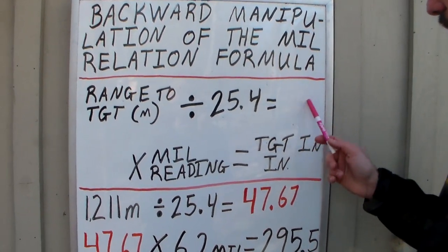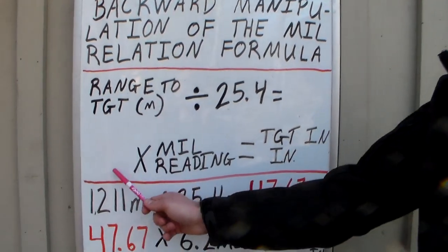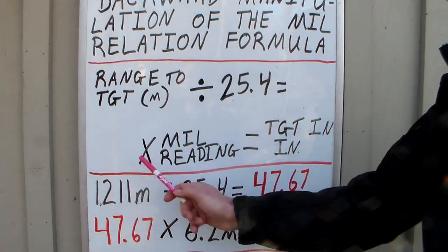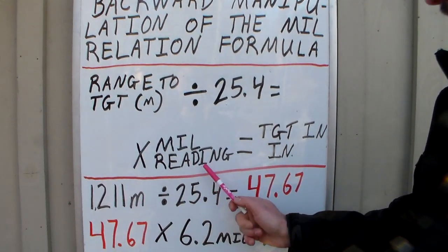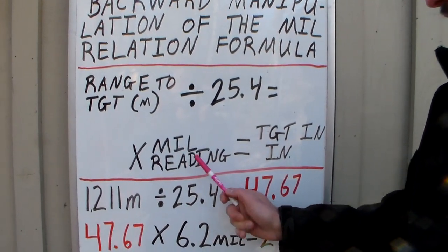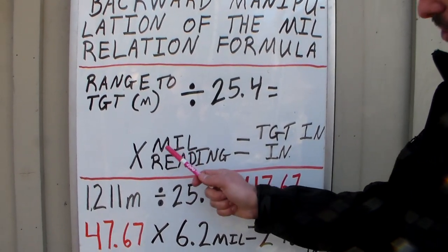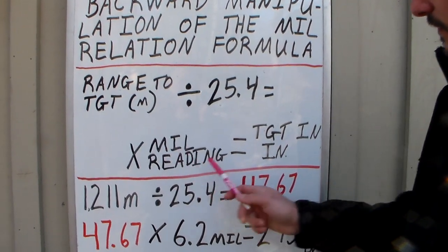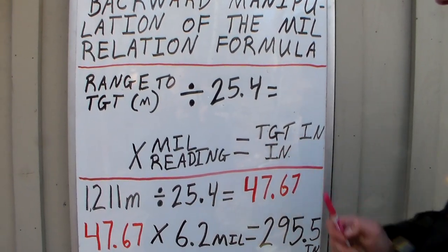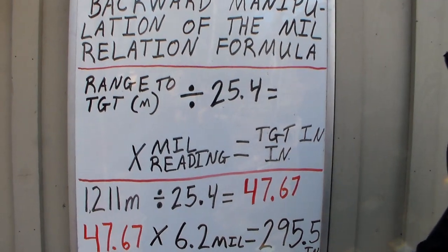Second half, we're going to take this number that we got here and we'll put it down here. So you'll take that number times the mill reading of that target. Go back and watch that first video. We talk about how to mill the target. So you're going to take that mill reading and then it's going to give you the target in inches.